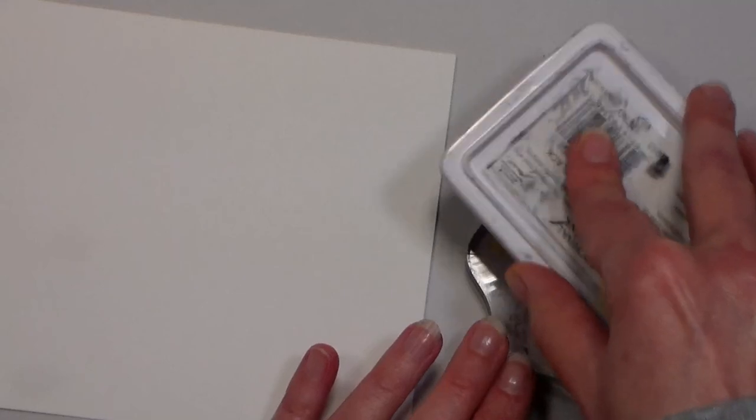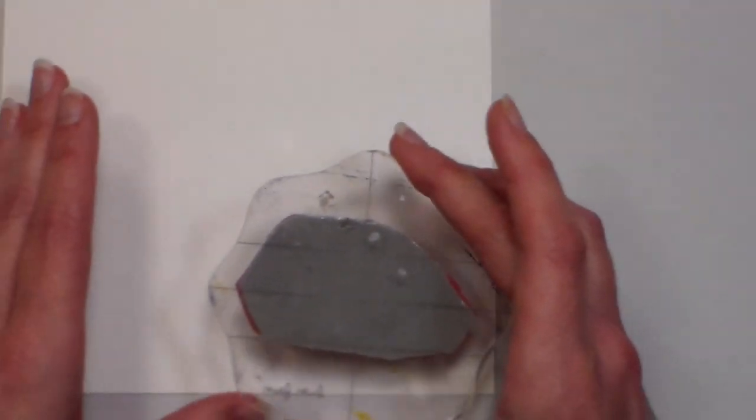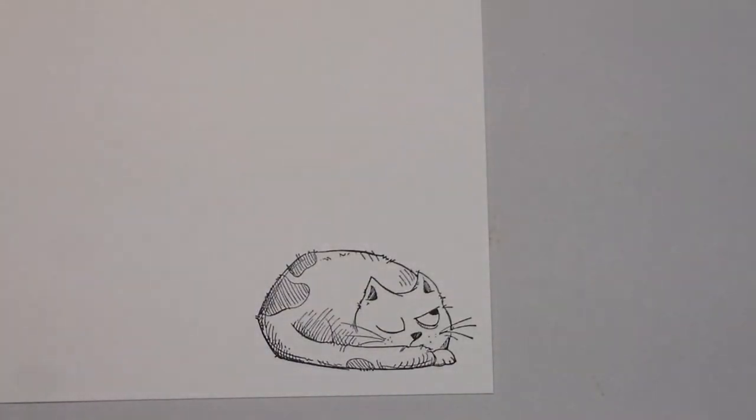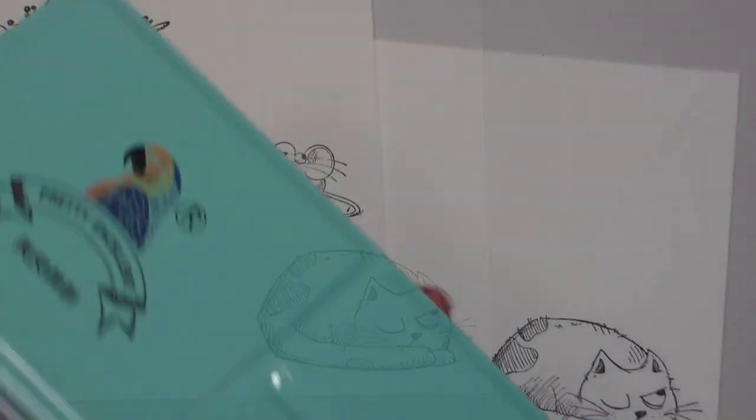So I had a nice leftover piece of that watercolor paper when I trimmed it down, and I'm just going to stamp the cat on this because I want to pop him up to give the card a little bit of easy dimension.